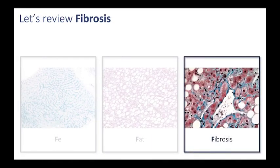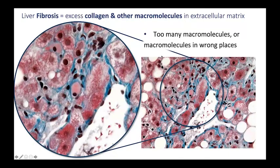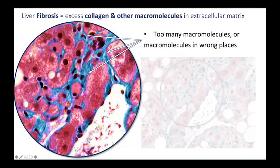Let's review liver fibrosis now. Liver fibrosis refers to excess collagen and other macromolecules in the extracellular matrix. Looking at this histologic slide in which trichrome has stained collagen blue, here we see a central vein and hepatocytes around that central vein. In this particular case, we have too much collagen in places where it doesn't belong — we don't just have collagen along the central vein, which is normal, but we have collagen insinuating itself around the hepatocytes in the extracellular matrix. This infiltrative process with deposition of macromolecules in the extracellular matrix is the definition of fibrosis.